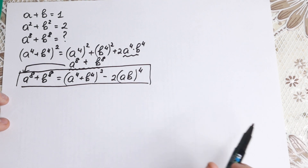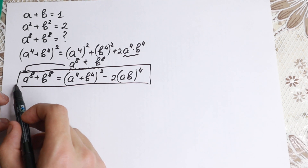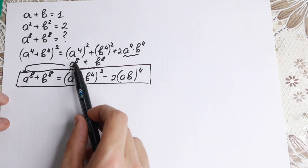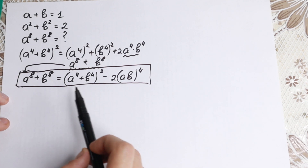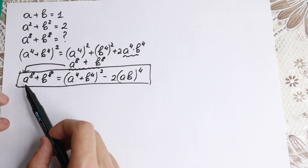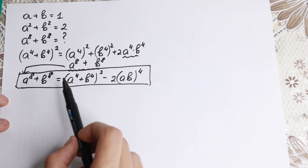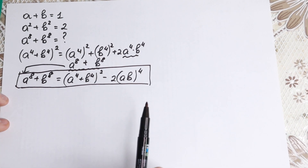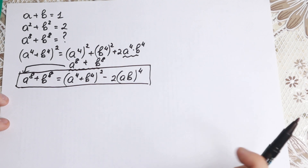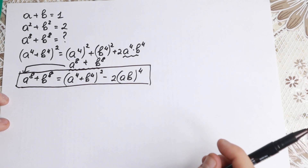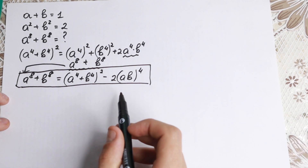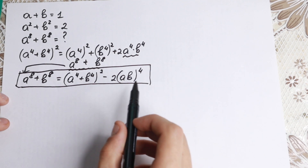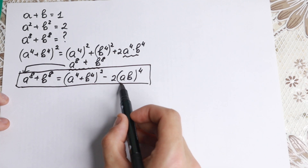So why I write this? Because I try to express a to the eighth plus b to the eighth. As you can see, we express this in a really good way — we have fourth power and square, not sixth or eighth power directly. Now let's go closer to the answer. Let's find the element we need: ab to the fourth power.